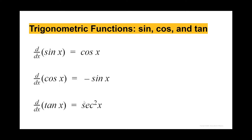For our trig functions, we have sine, cosine, and tangent, which are the common ones you'll see most likely. The derivative of sine of x equals cosine of x, the derivative of cosine x equals negative sine x, and the derivative of tangent x equals secant squared x. Just make sure to note that cosine equals negative sine x, because with the sign change, it's an easy place to make an error.